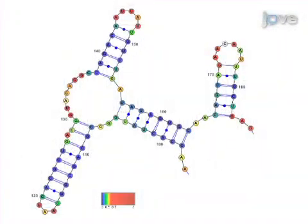Ultimately, RNA structure software is used to predict RNA secondary structure using the pseudo-free energy constraints derived from SHAPE analysis.